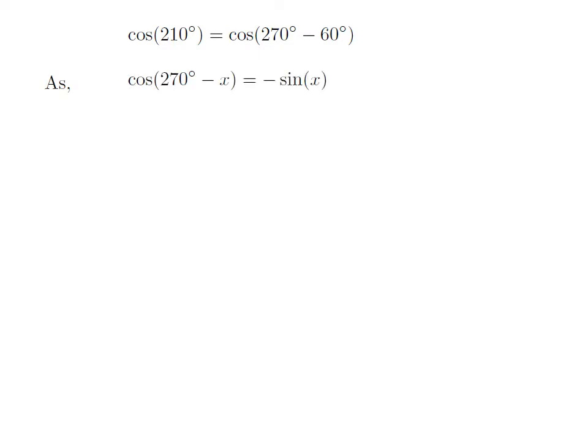As we know, the trigonometry identity cosine of 270 degrees minus x is equal to minus sine of x.